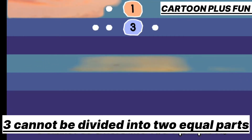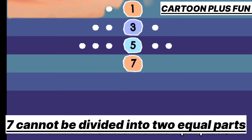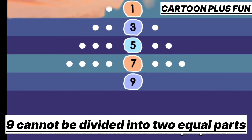Seven cannot be divided into two equal parts. Nine cannot be divided into two equal parts.